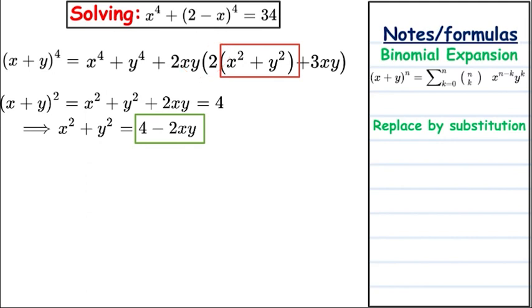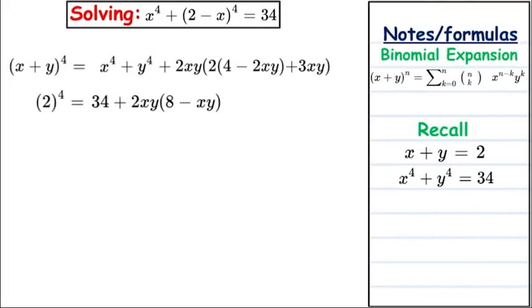We substitute 4 minus 2xy for x² plus y² inside the parenthesis and multiply through. This gives us a new combination: 2xy times (4 minus 2xy plus 3xy) which simplifies to 2xy times (8 minus xy), since 2 times negative 2 gives minus 4xy and plus 3xy gives minus xy overall.